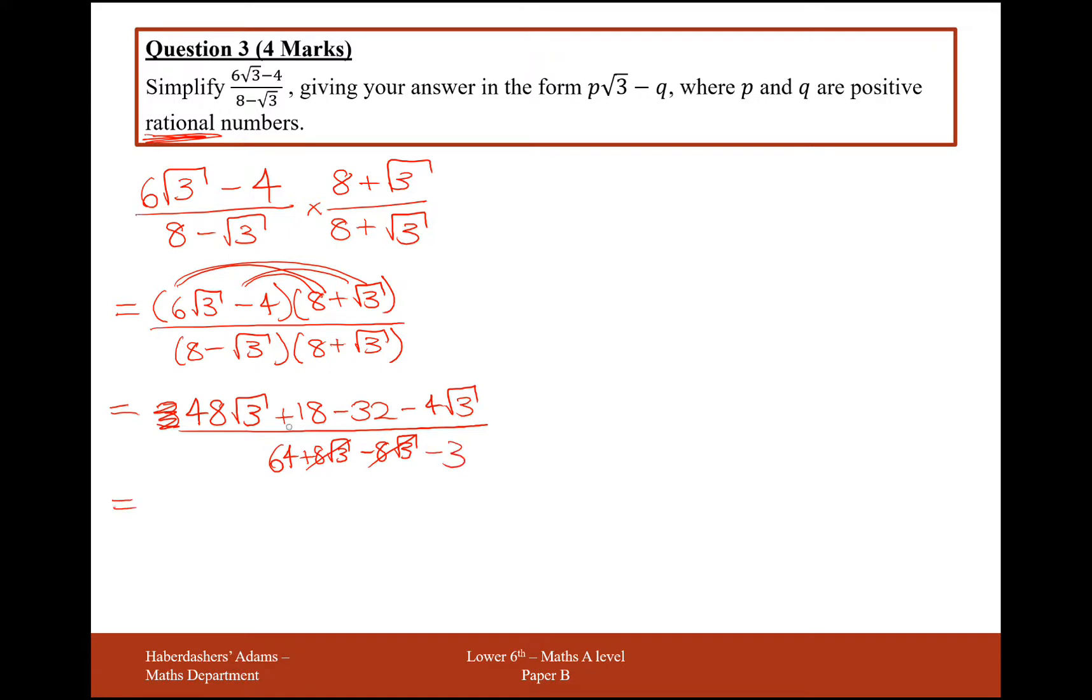So with this fraction here, let's simplify the top, we're going to get minus 14, add 48 root 3 minus 4 root 3. That's 44 root 3 over 64 minus 3 is 61.